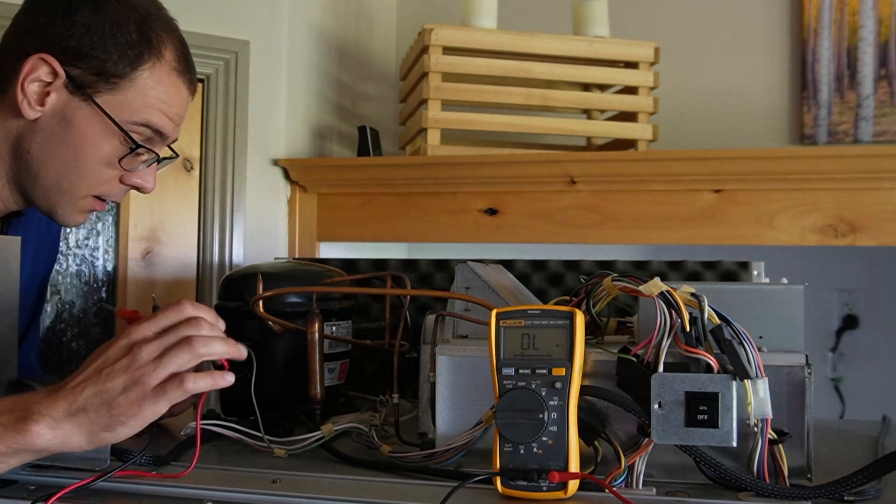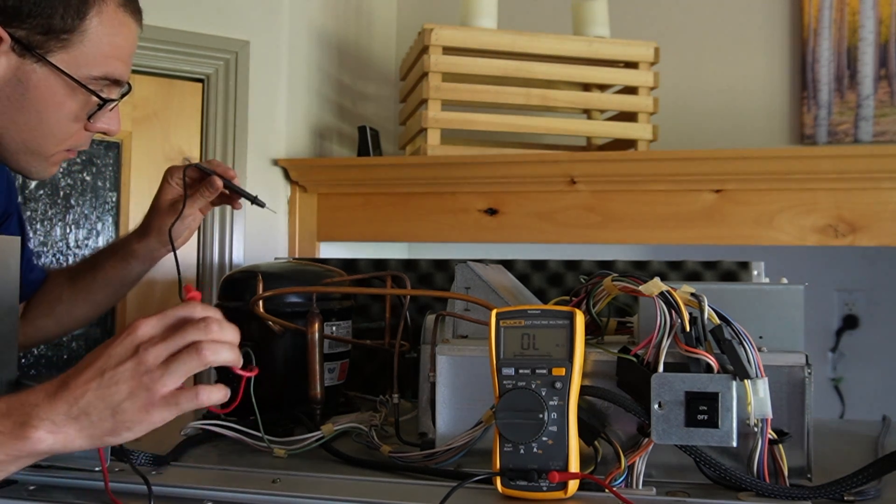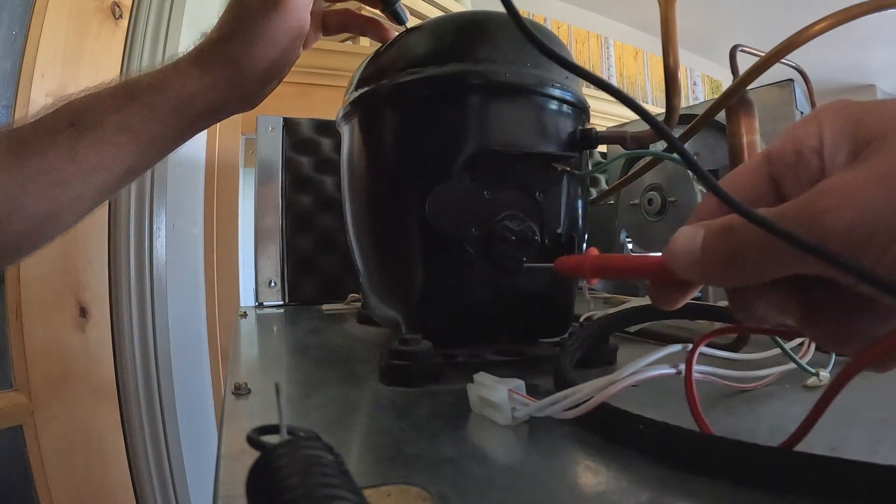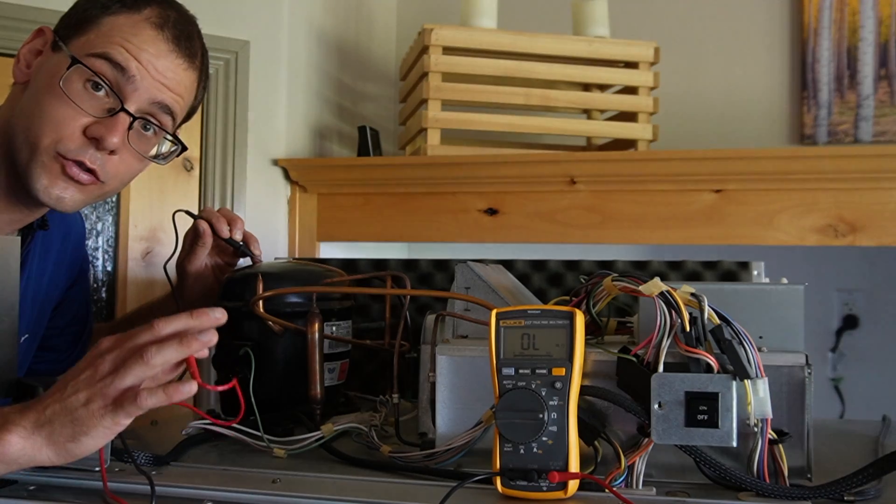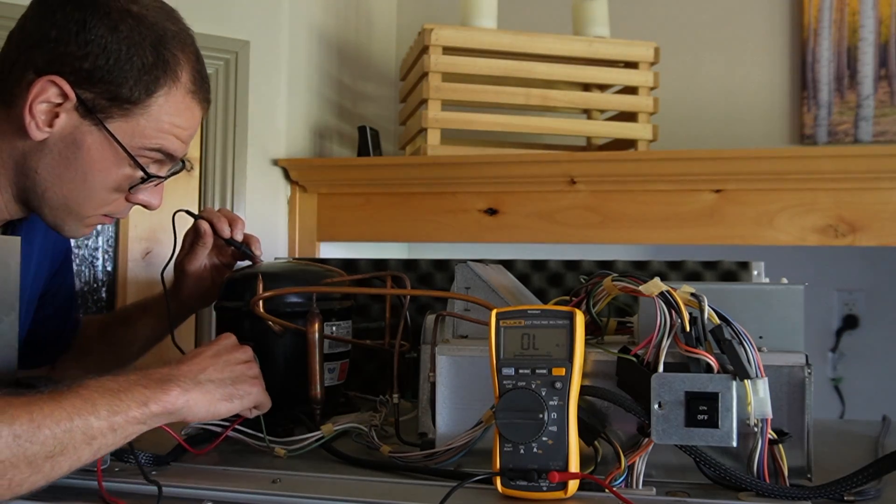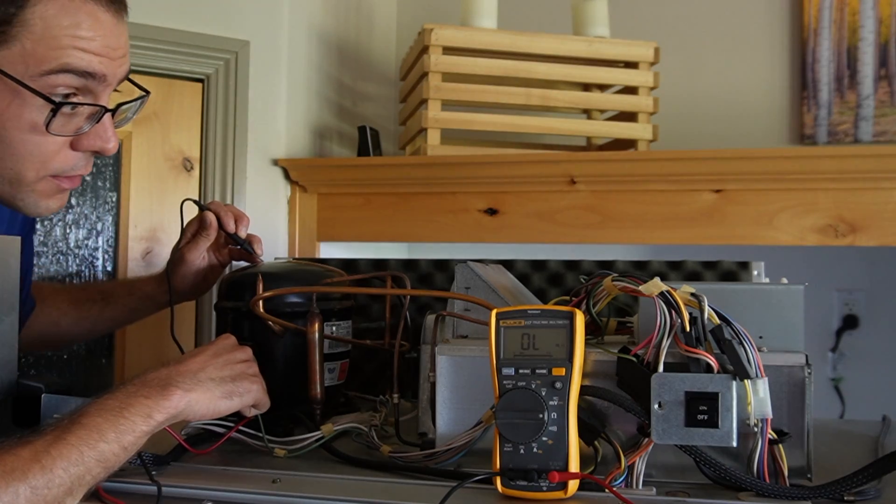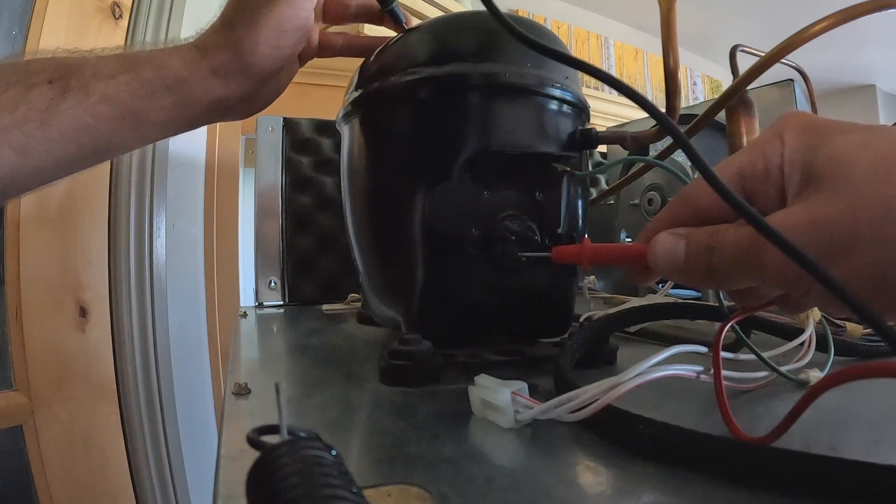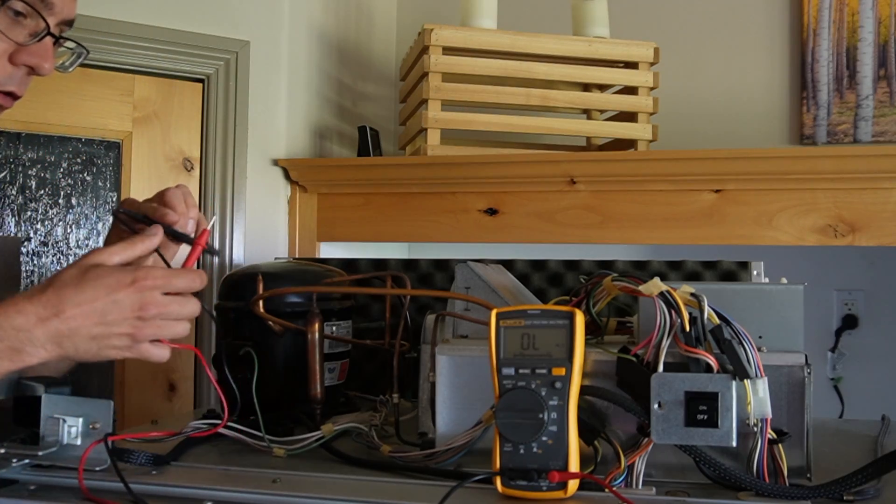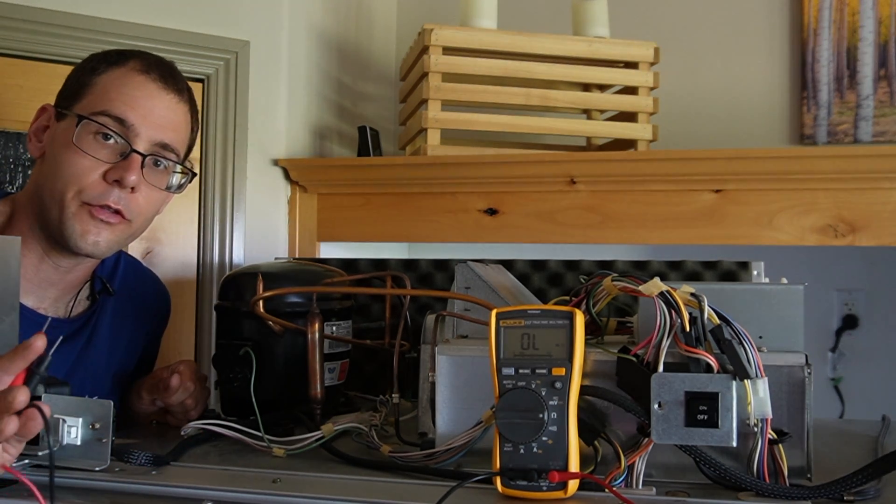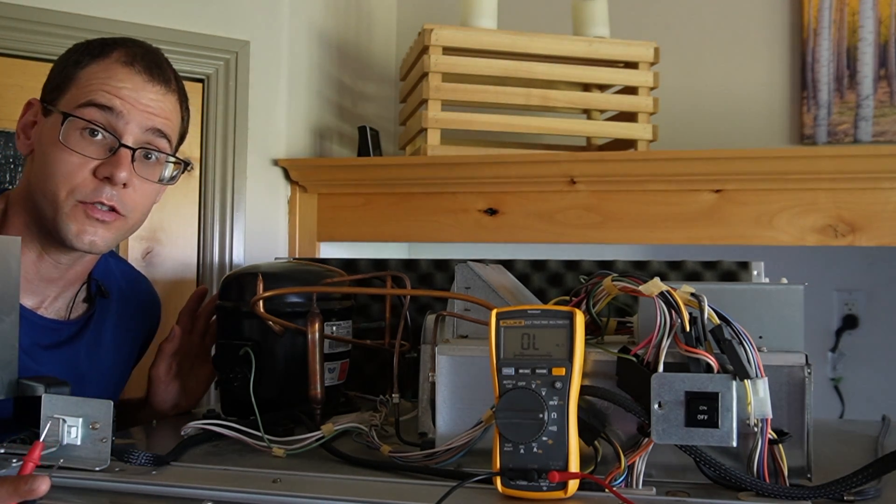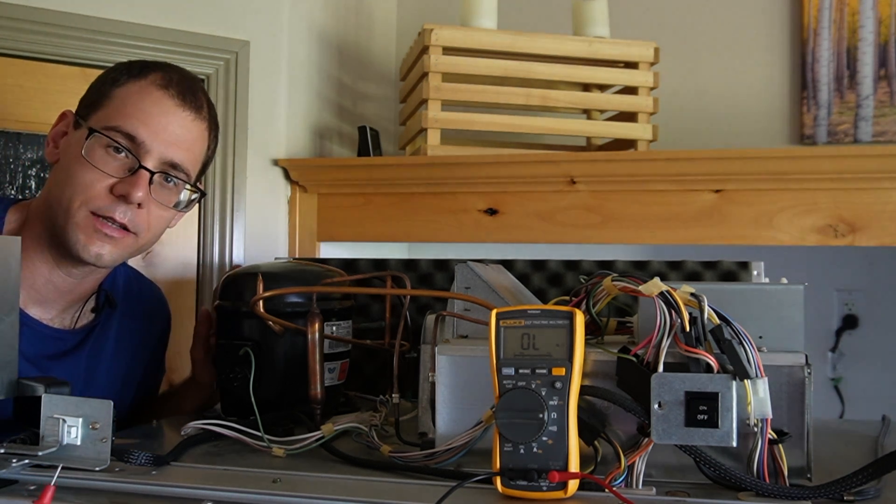We should do one more check to verify that. I'm going to put one probe on the body of the compressor and one probe onto each of these three leads to make sure there's no shorts to ground. We want no connection between any of these three leads and ground. On the left it's reading OL, that's good, that means it's open. On the bottom, same thing. On the right side, same thing. This is very good news. It looks like our compressor is okay. The windings inside are okay and the resistance values are what they should be. So this thing likely will work, and we're going to try that in the next step.